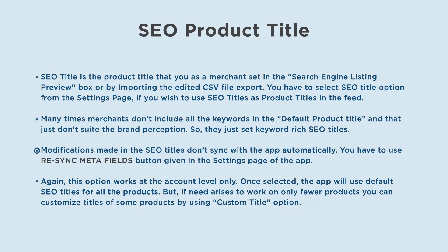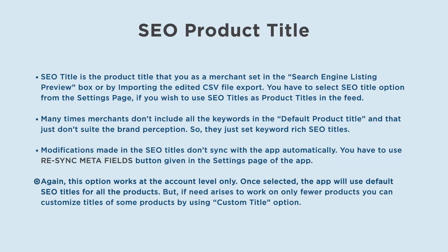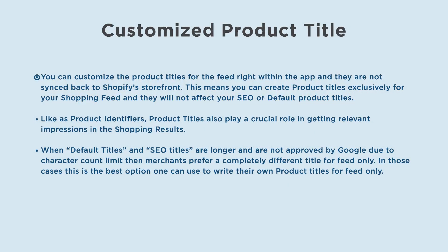Modifications made in the SEO titles don't sync with the app automatically. You have to use the re-sync meta fields button given in the settings page of the app. Again, this option works at the account level only. Once selected, the app will use default SEO titles for all products, but if need arises to work on only fewer products, you can customize titles of some products by using the custom title option.